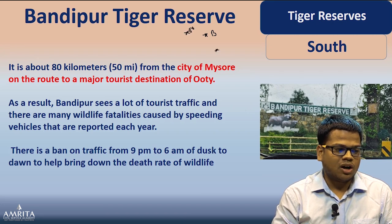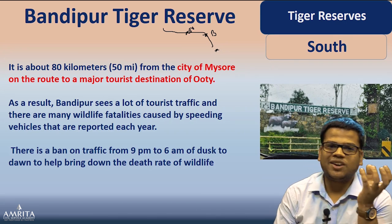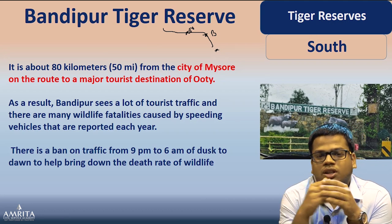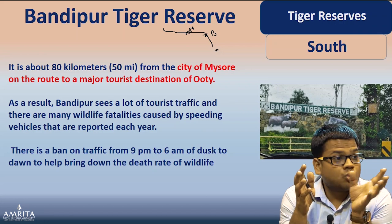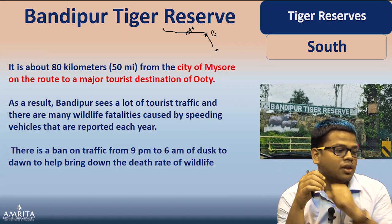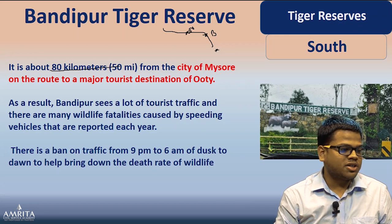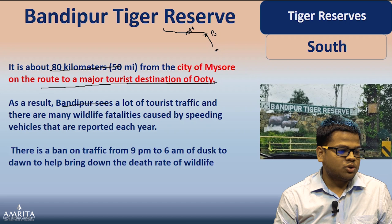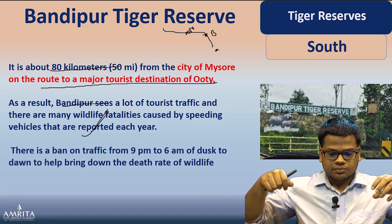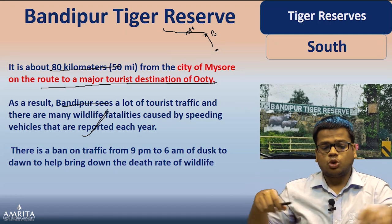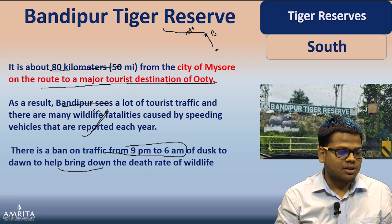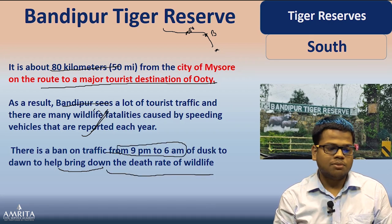Bandipur is about 40 kilometers from Mysore on the route to Ooty. Bandipur sees a lot of tourist traffic, and because there are no safe corridors for animals, vehicles going very fast cause many casualties of animals. That is why a ban on night traffic has been imposed — to reduce the death rate of wildlife. This is an example of how development in the name of roads through tiger reserves harms ecological regions.